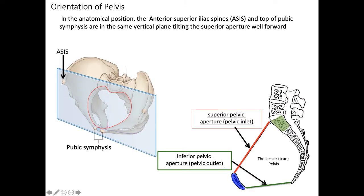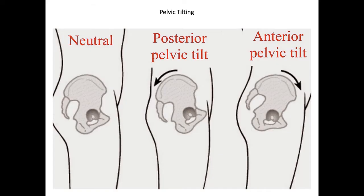In anatomical position, the ASIS and pubic symphysis are in the same vertical plane. This position naturally angles the pelvis forward, so the superior pelvic aperture is tilted when compared to the inferior pelvic aperture. A posterior pelvic tilt is when the ASIS is posterior compared to the pubic symphysis, while an anterior pelvic tilt is when the ASIS is anterior compared to the pubic symphysis. While tilting is normal for movement, excessive or prolonged tilting can lead to abnormalities or pathologies.